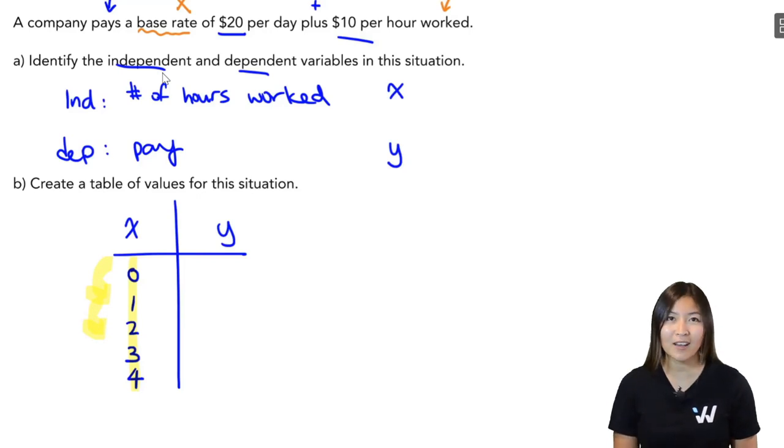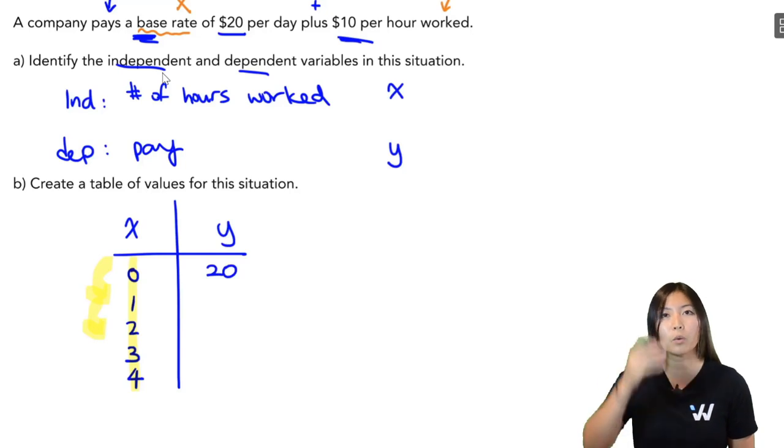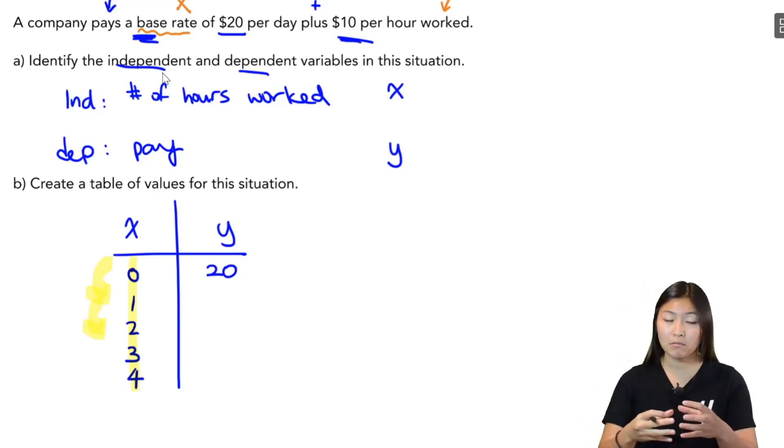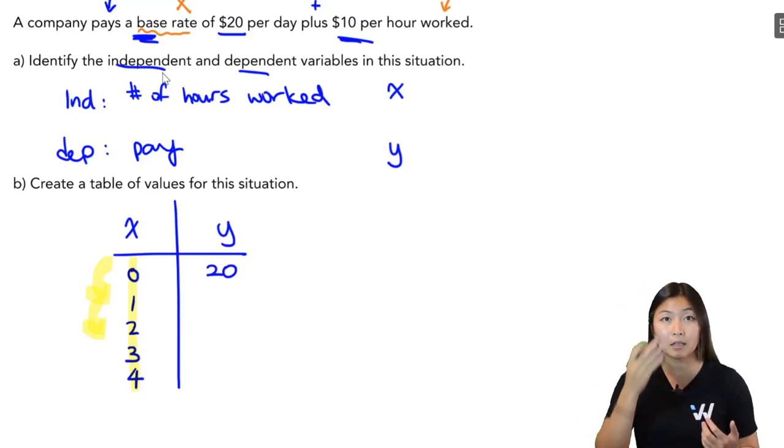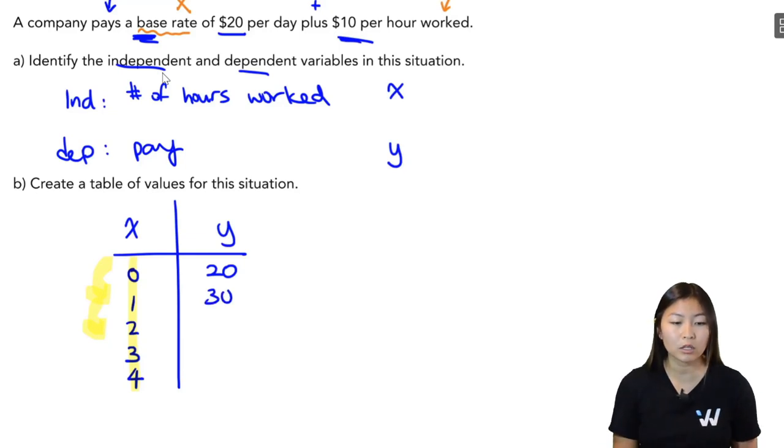Now let's fill out the Y values. Let's calculate the dependent variable. So if this person worked zero hours, how much are they going to get paid? Well, regardless, they're going to get paid a base rate of $20 per day, even if they don't work. So if they didn't work, they don't get that bonus $10 an hour. So they're just getting paid the base $20. How about if they work one hour? Well, I get my base pay. Plus on top of that, I get $10 for that one hour that I worked. So in total, that's $30.